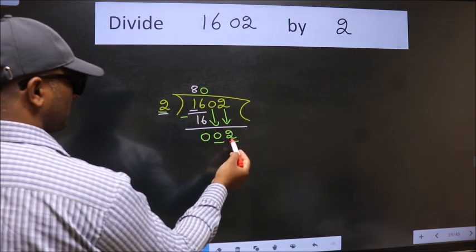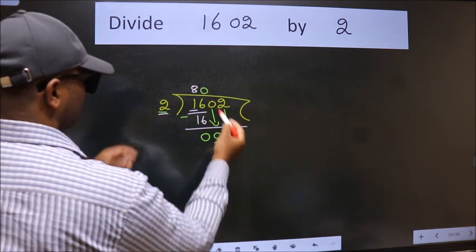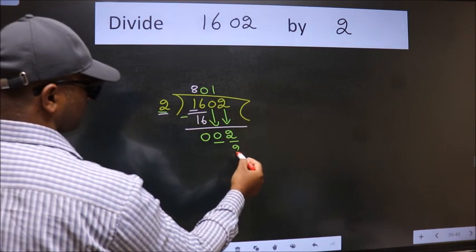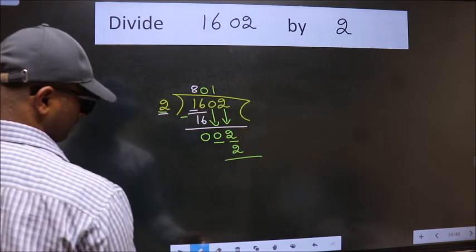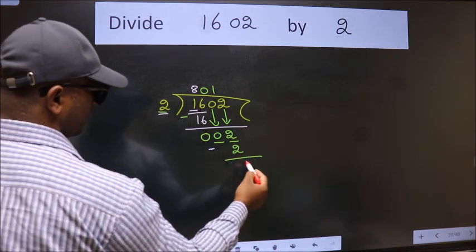So 2. When do we get 2 in 2 table? 2 times 1 is 2. Now we subtract. We get 0.